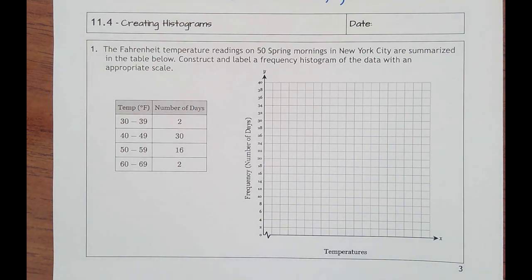11.4 creating histograms says the Fahrenheit temperature readings on 50 spring mornings in New York City are summarized in the table below. Construct and label a frequency histogram of the data with an appropriate scale.